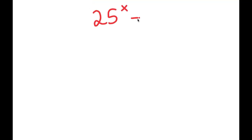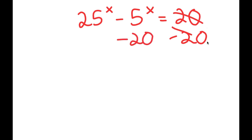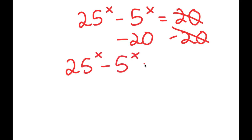In this video, I'm going to be solving the equation 25 to the power of x minus 5 to the power of x is equal to 20. To solve this equation, I'm going to first start by subtracting 20 on both sides. So these two cancel out and I get 25 to the power of x minus 5 to the power of x minus 20 is equal to zero.